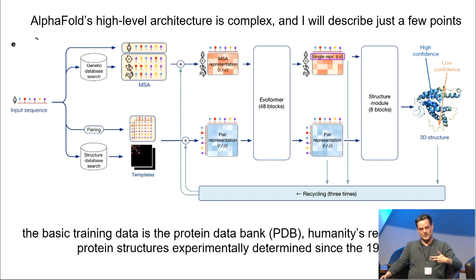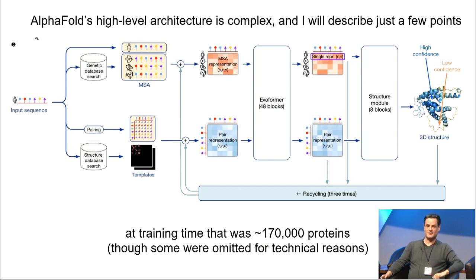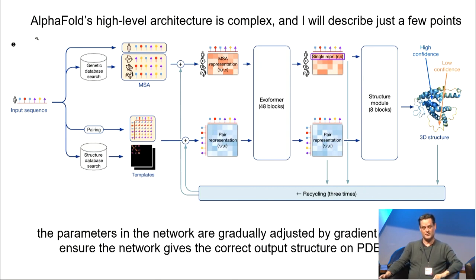The basic training data used is from the protein databank. So that's a repository of protein structures, which have been experimentally determined going back to the 1970s, those very difficult experiments I mentioned before. At the training time, that was about 170,000 proteins. It's about 200,000 today. A small fraction of those were omitted for technical reasons, but basically that's what they used. And as is always the case with these machine learning techniques, the parameters in the network, which is gradually adjusted, they started out very random, and they're gradually adjusted by gradient descent to ensure the network gives the correct output structure on PDB inputs.